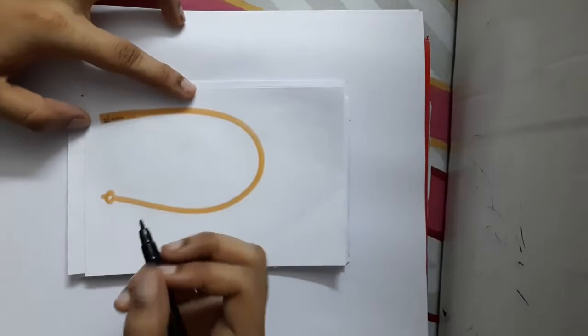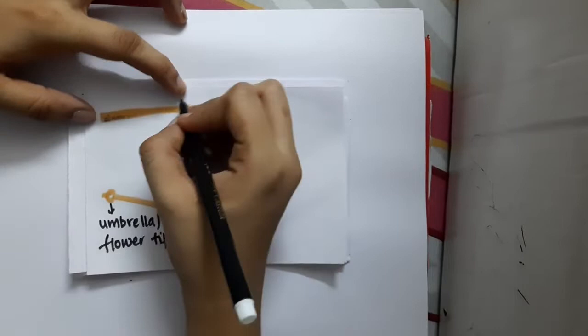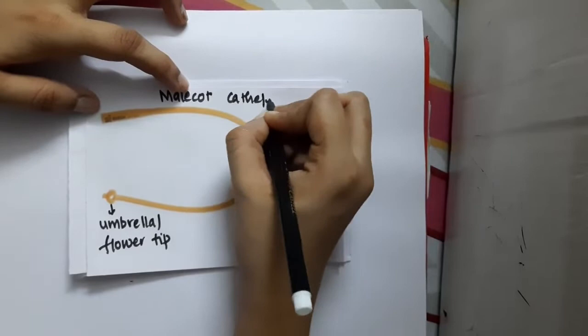is this? See, you have a catheter, and at the tip it has an umbrella or flower tip. So what is this? This is a Malecot catheter. It